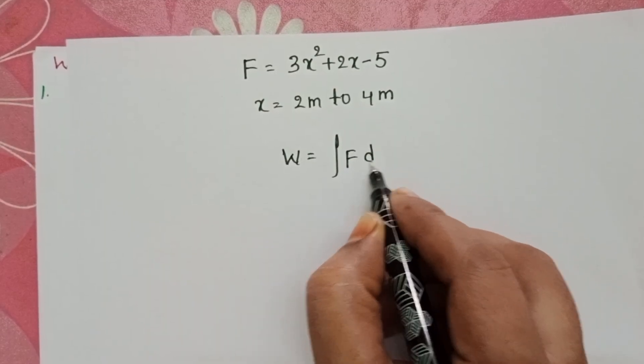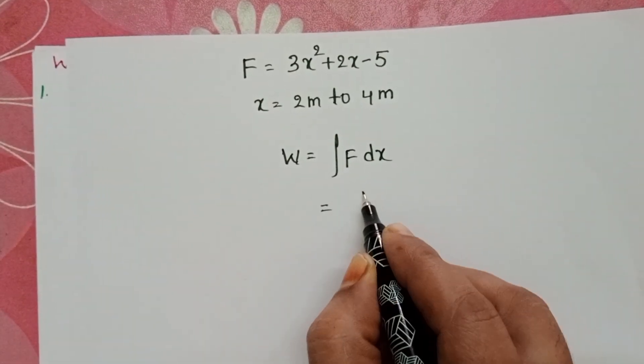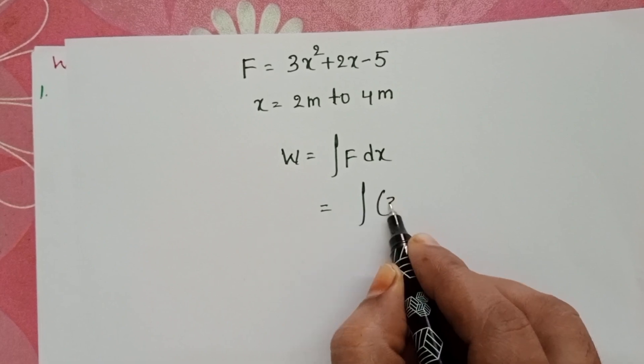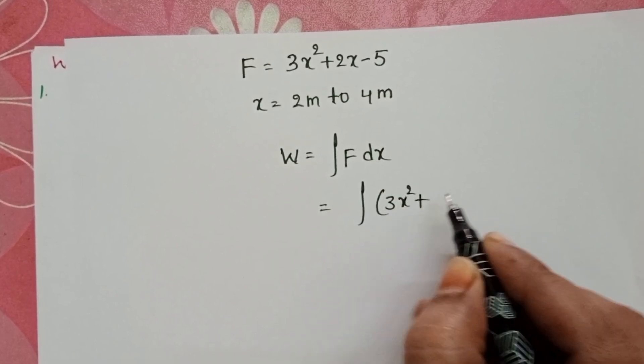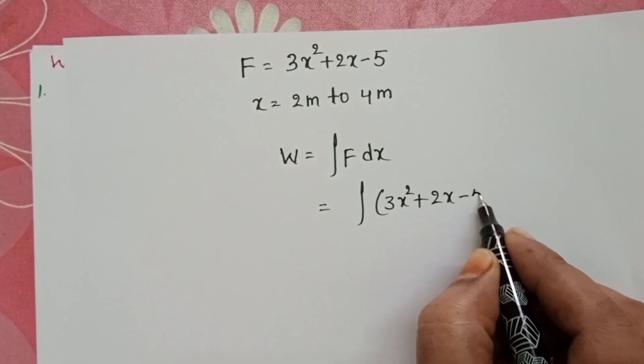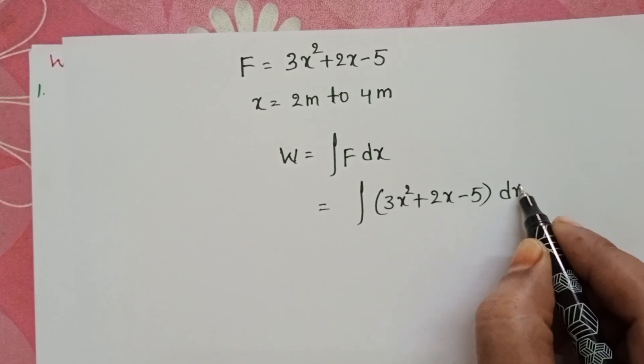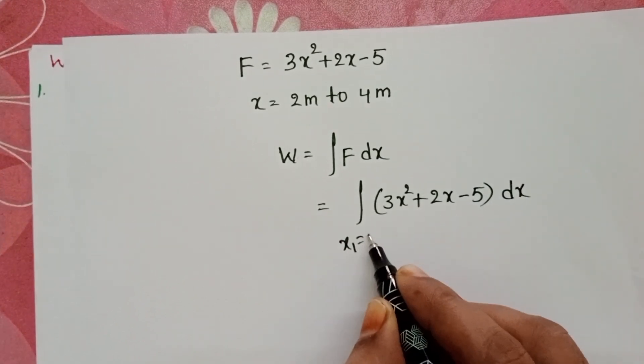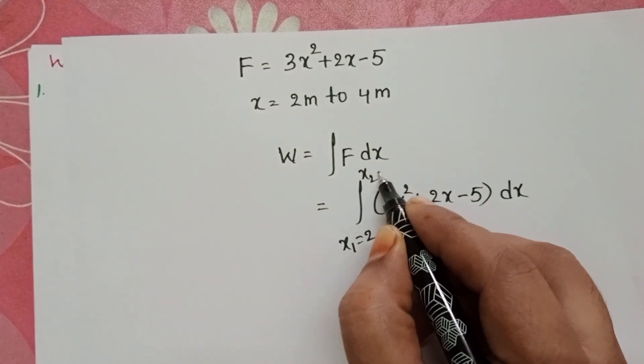Work equals to integral F dx. Integral 3x² + 2x - 5 dx and the limits from 2 meters to 4 meters.